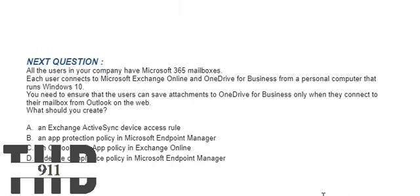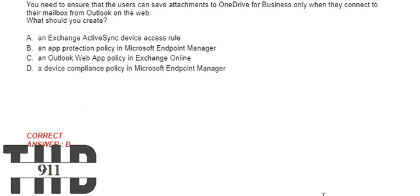All the users in your company have Microsoft 365 mailboxes. Each user connects to Microsoft Exchange Online and OneDrive for Business from a personal computer that runs Windows 10. You need to ensure that users can save attachments to OneDrive for Business only when they connect to their mailbox from Outlook on the web. What should you create? Option A: An Exchange ActiveSync device access rule. Option B: An app protection policy in Microsoft Endpoint Manager. Option C: An Outlook web app policy in Exchange Online. Option D: A device compliance policy in Microsoft Endpoint Manager. The correct answer is Option B.